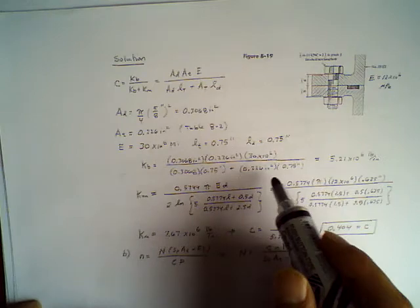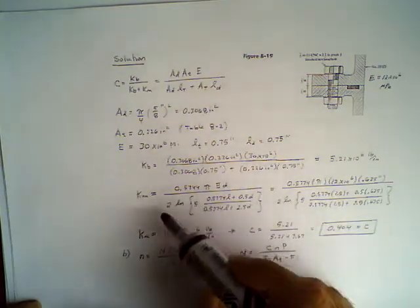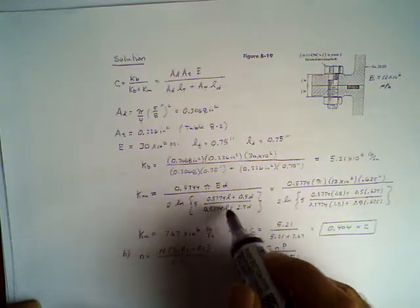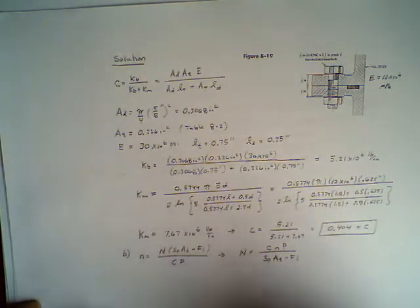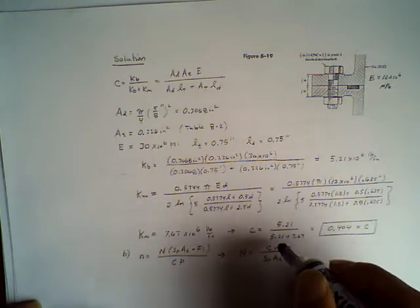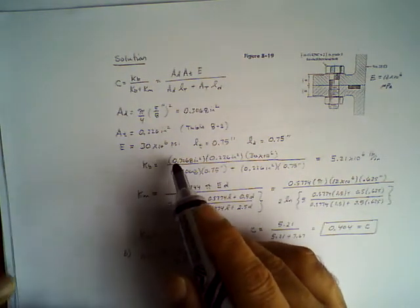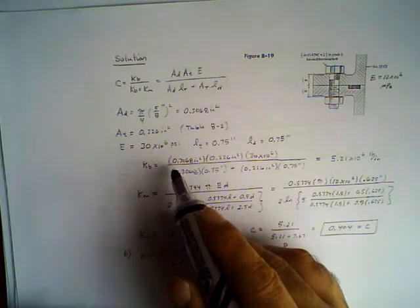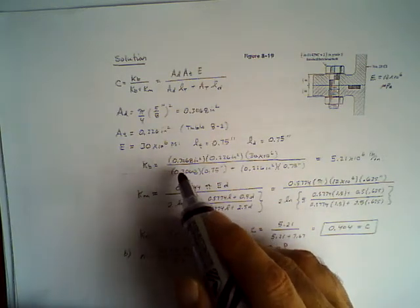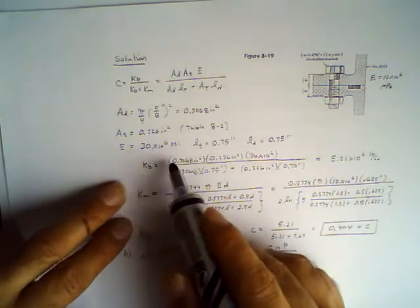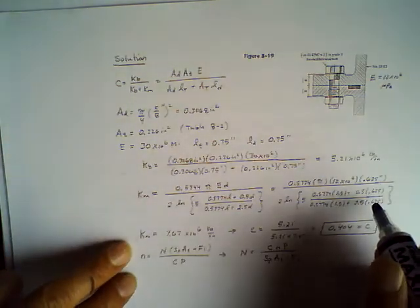kb is the stiffness of the bolt and it's going to be equal to this value. Then km, you're going to look up this equation. We already provided you this equation, so you simply substitute the values and get km. Then you can calculate C. How did you get the equation for kb? This is basically a rod with two different areas, two springs in series. I have an equation for it.